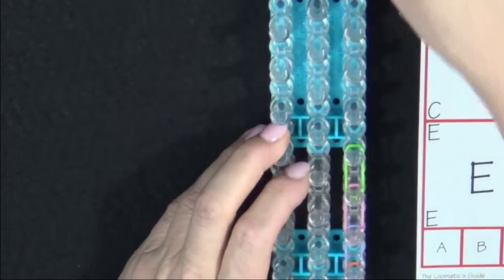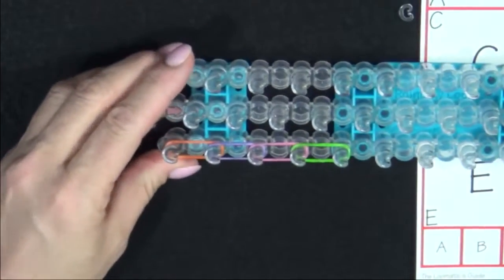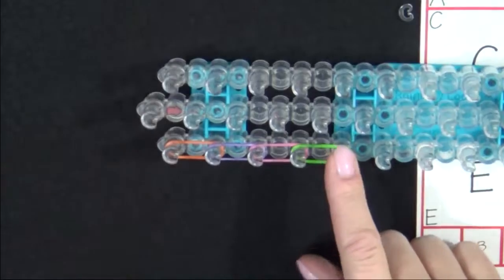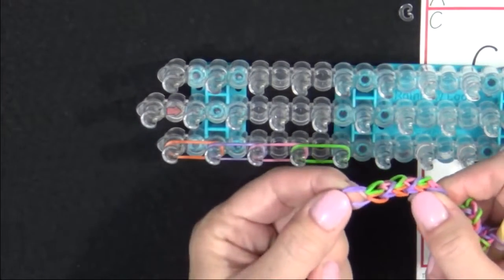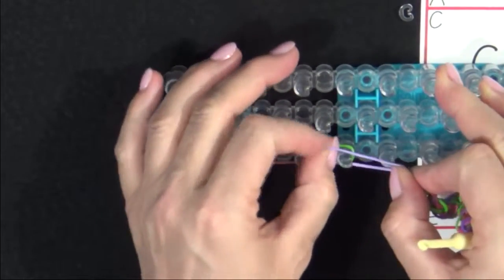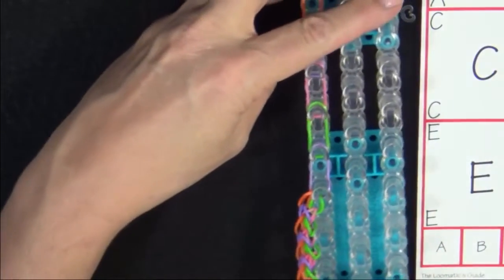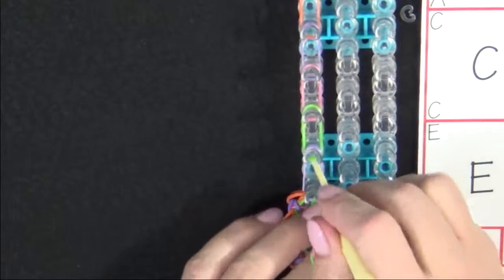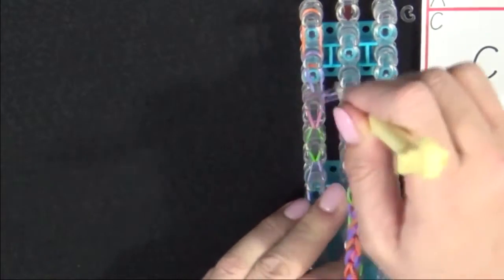If you need to extend, you place your bands on one side of the loom. And then, on this last pin, you locate the cap band on the end of your bracelet, and then you stretch the cap band from that last pin to the one behind it.